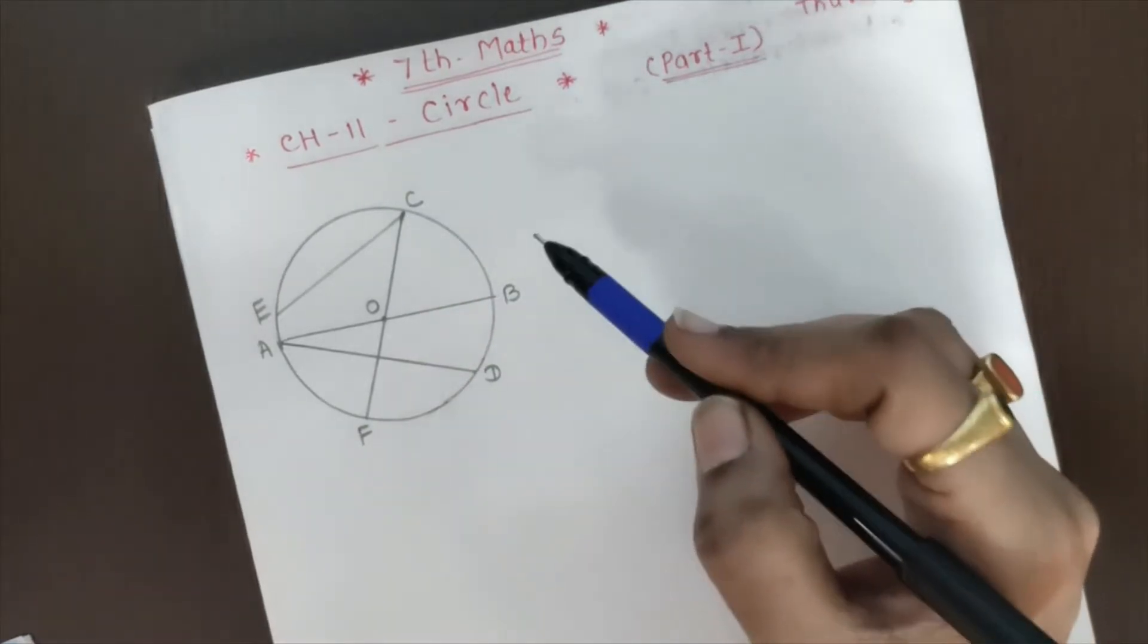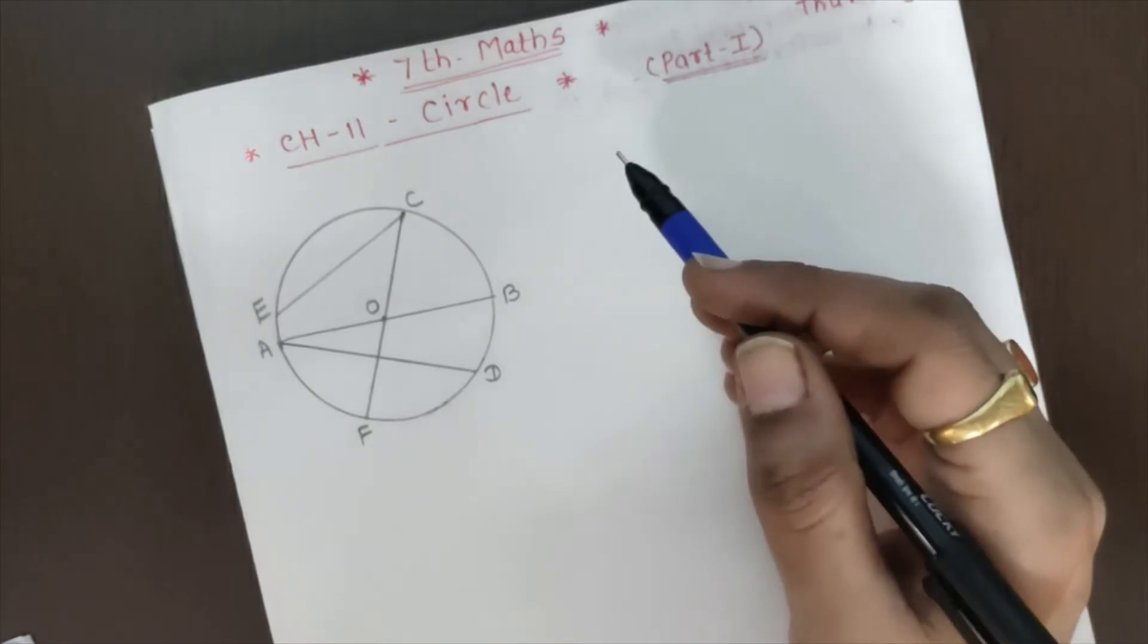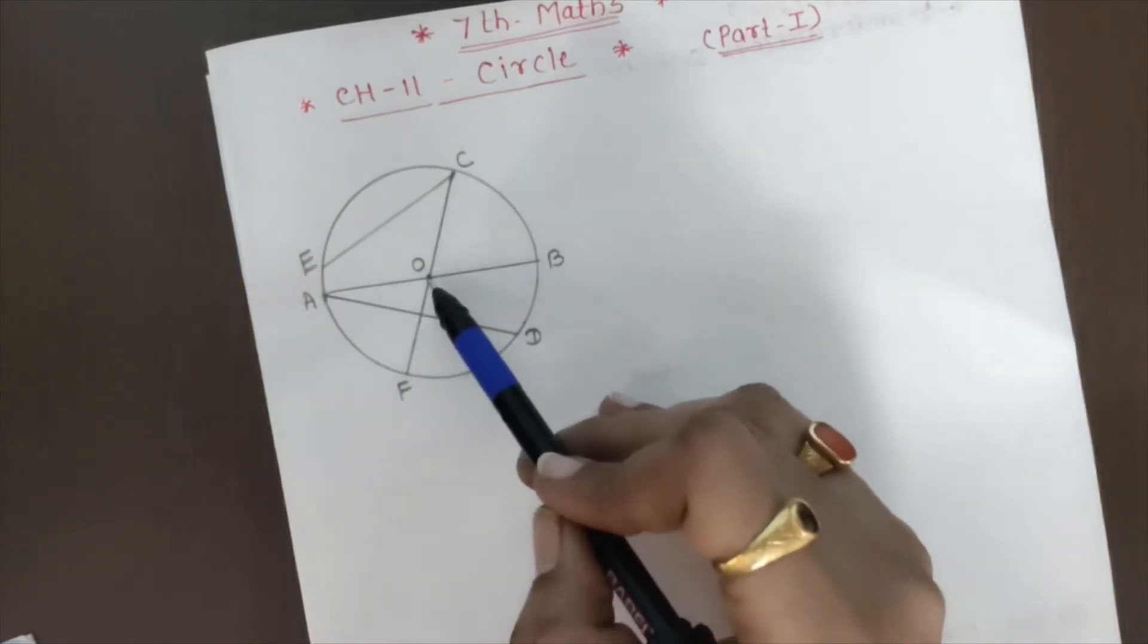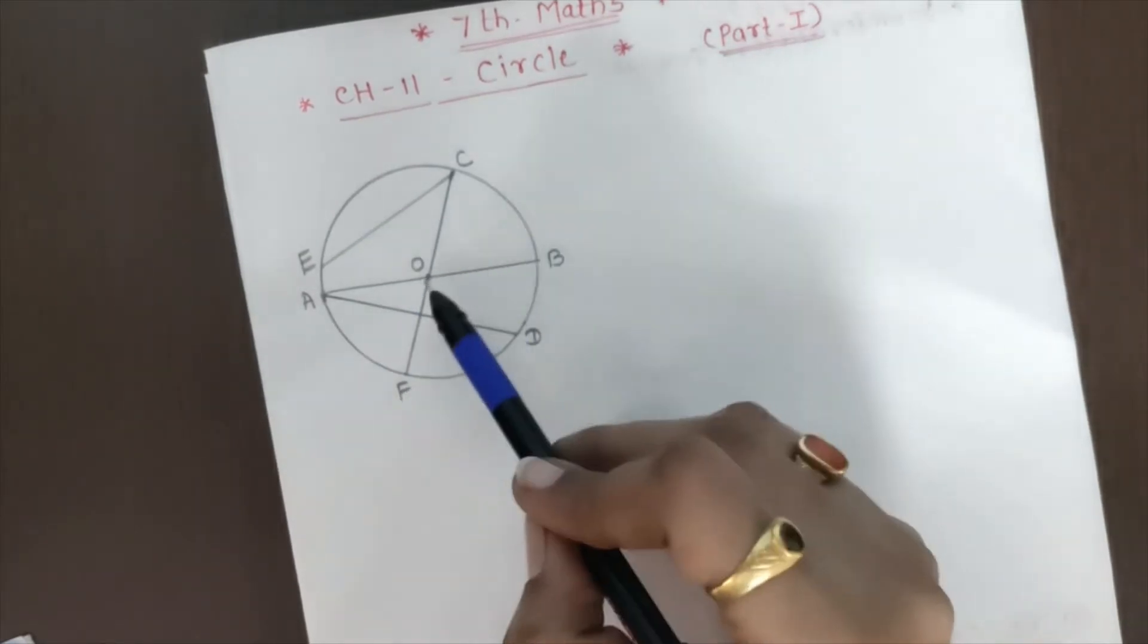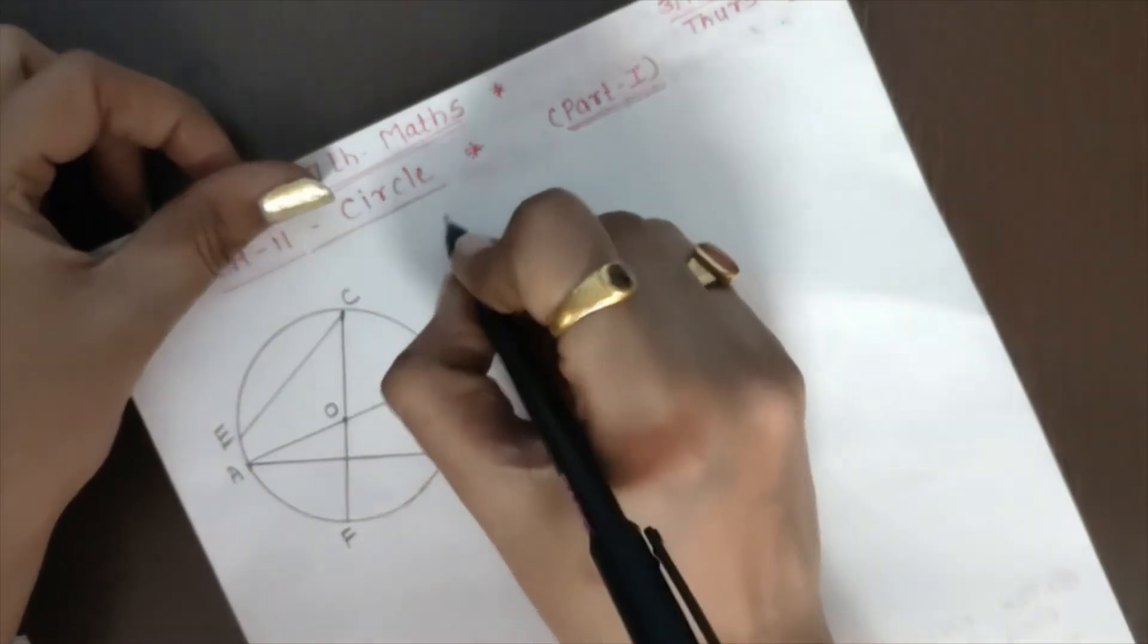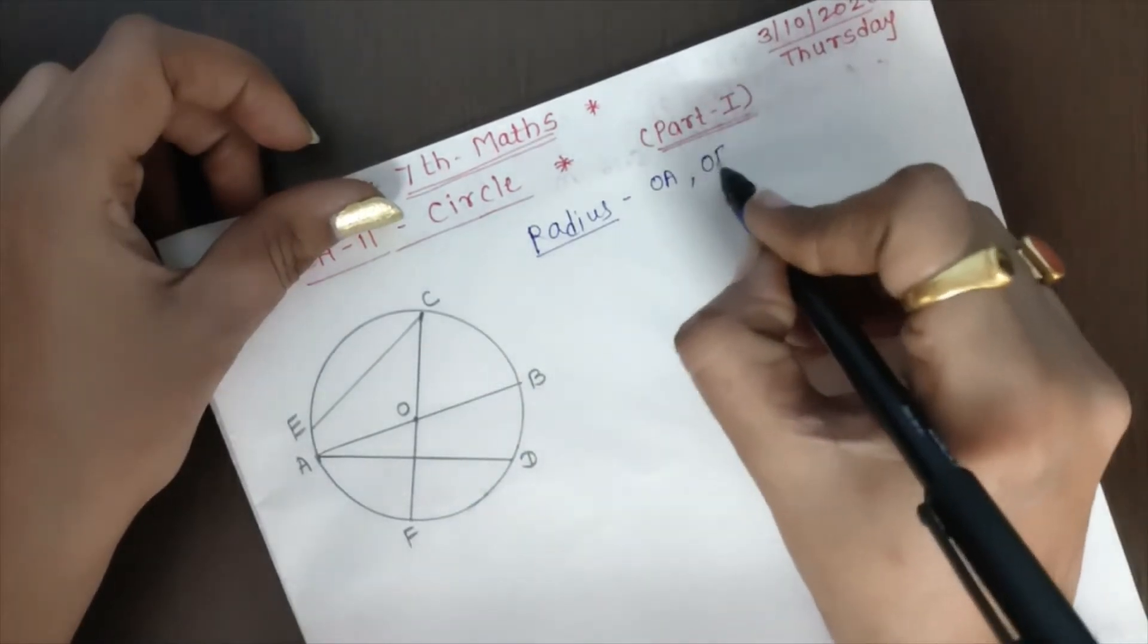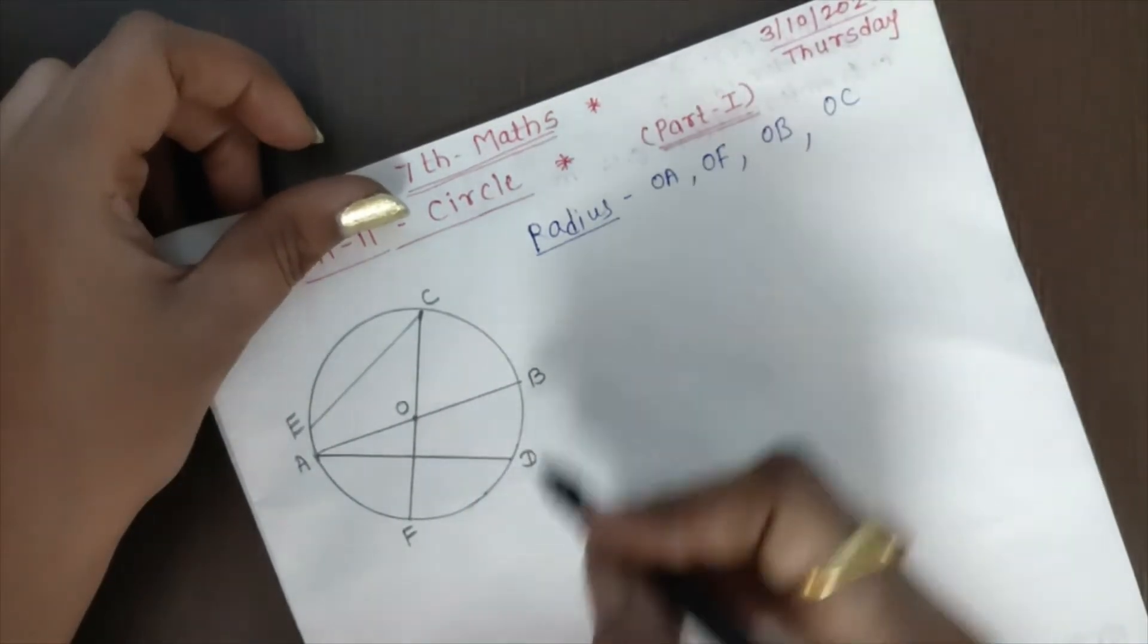Now tell me, in this figure which are the radius of the circle? Radii is the plural form. So see, OA, this is your radius from center of the circle to the circumference. This distance is called radius, so segment OA, then segment OF, then segment OB, and segment OC. These are the radius of the circle.